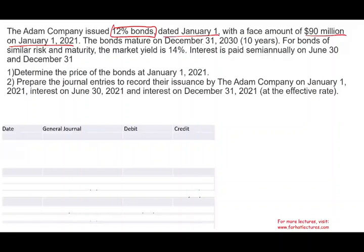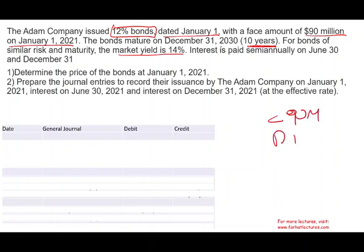The bond matures on December 31st, 2030, so the life of the bond is 10 years. For bonds of similar risk and maturity, the market yields 14%. This is important — they're telling us that you are not paying as much as the market. The market for similar bonds is paying 14%; you're paying 12%. So immediately, the price of the bond is going to be less than $90 million. This bond will sell at a discount — you need to know that before you even do any computation.